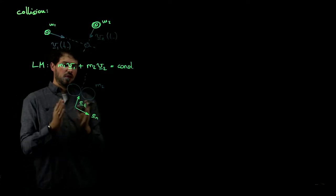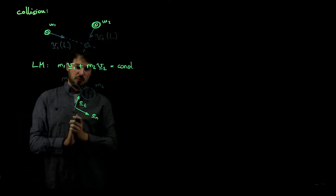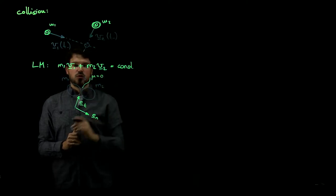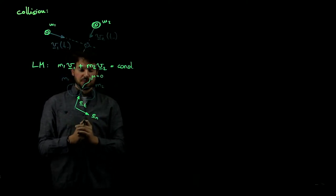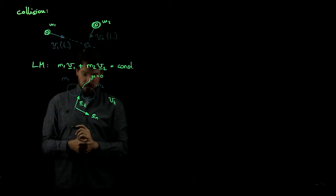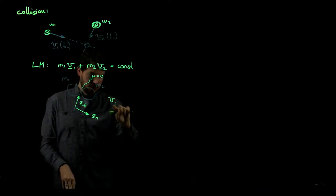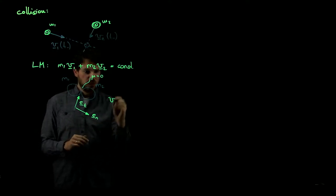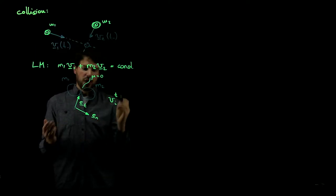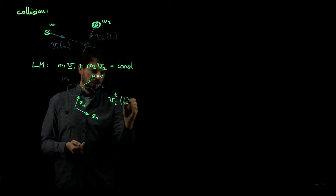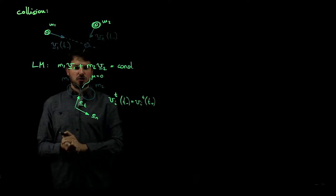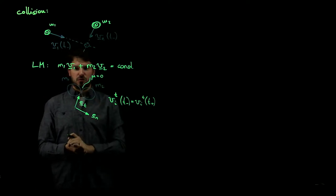We look at velocity components normal and tangential to the plane of impact. If the collision is frictionless — which we usually assume for smooth particles — then the tangential velocity of either particle does not change. Note the slight notation change: we put the tangential index t at the top so we can use particle one or two in the subscript. So for either particle i, the tangential velocity before impact equals the tangential velocity after impact.